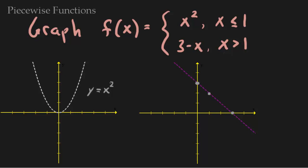Now that we know how to graph each function on its own, let's graph the piecewise function. The trick is knowing where each piece applies. My function f has to look like x squared, but only when x is less than or equal to 1. When x equals 1, you get 1 squared, so we're right here. Notice that it is less than or equal to, which means it's a closed dot. Let's put a closed dot there, and the graph looks like x squared for all of this region.